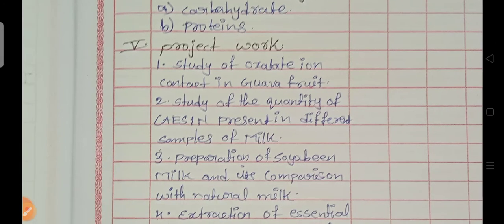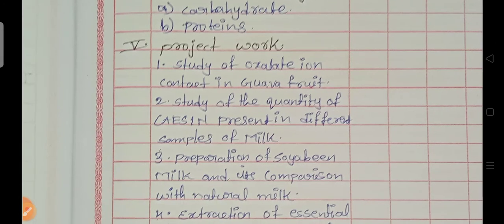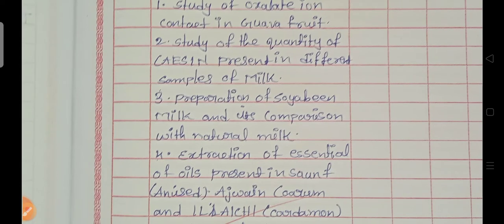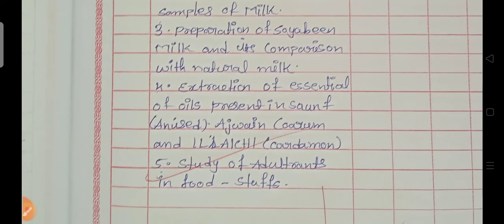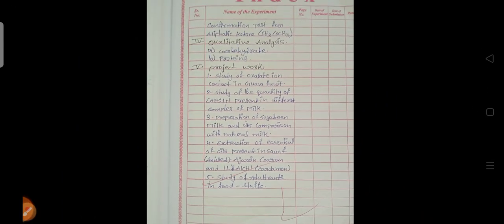Fifth one is project works: study of oxalate ion content in guava fruit, study of the quantity of casein present in different samples of milk, preparation of soya bean milk and its comparison with natural milk, extraction of essential oils present in saan, ajwain and ilachi cardamom, and study of adulterines in food structure. This is the index of the second page.